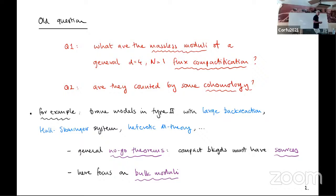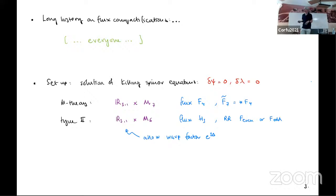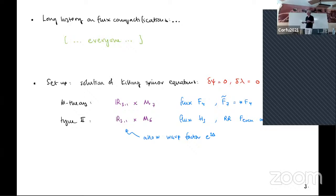There's a long history of flux compactifications. I started writing down some references and then I realized I was including almost everyone in the room, so I just say everyone. So let me just remind you of what the setup is. I'm going to talk about some background, some solution of the Killing spinor equations. The two cases I'll focus on are M-theory compactified to four dimensions, either on a seven or six-dimensional manifold with some warp factor. In M-theory we turn on four-form flux, and in type II there's the H3 and the Ramond-Ramond flux.